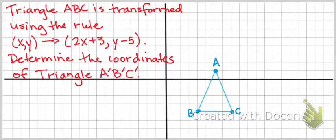Here it says triangle ABC is transformed using this rule. Determine the coordinates of the triangle A prime, B prime, C prime. So after that rule has been applied and the figure has been transformed.